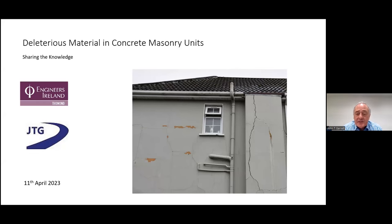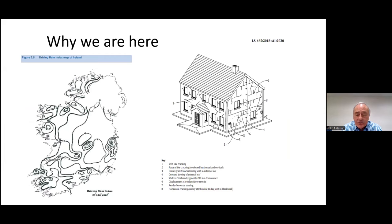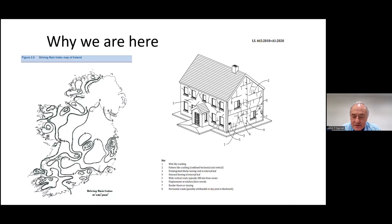We're here because of the pattern of cracking noted on many houses suffering from deleterious material in block work. On the right-hand side, I've shown a sketch taken directly from IS-465, indicating the pattern of cracking that leads one to suspect the presence of deleterious material. This includes web-like cracking, pattern-like cracking — that is, horizontal and vertical cracking — disintegration of blocks leaving a void in the external leaf, outward bowing of the external leaf, wide cracks near the corners about 200 millimetres from the corners, displacement at window and door heads, render blown or missing, and horizontal cracks possibly attributable to day joints in block work.